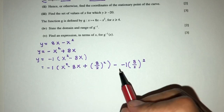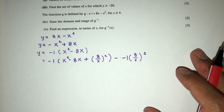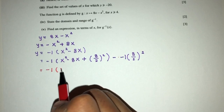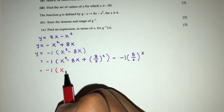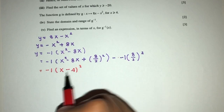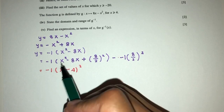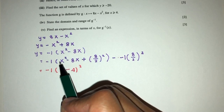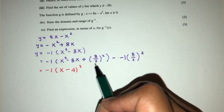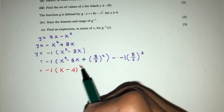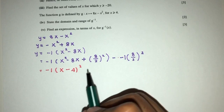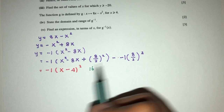Simplifying, we get minus 1 times (x - 4) squared, along with the remaining constant term. Note that x squared inside gives us x, and the minus 8 divided by 2 gives us minus 4. Then 4 squared equals 16.